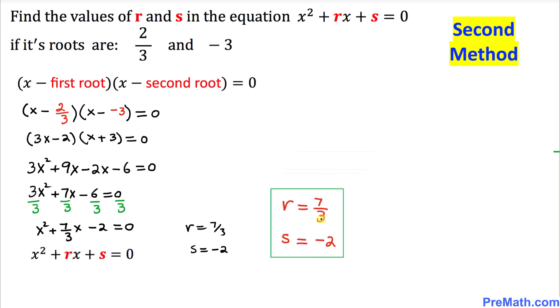Thus our r and s values turn out to be 7/3 and negative 2 respectively. Thanks for watching and please don't forget to subscribe to my channel for more exciting videos.